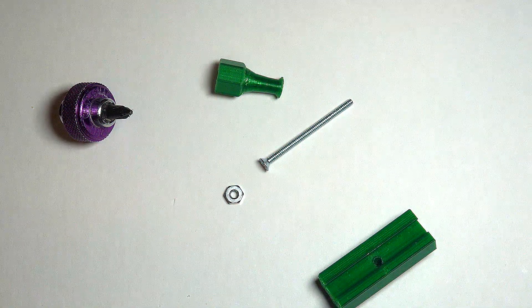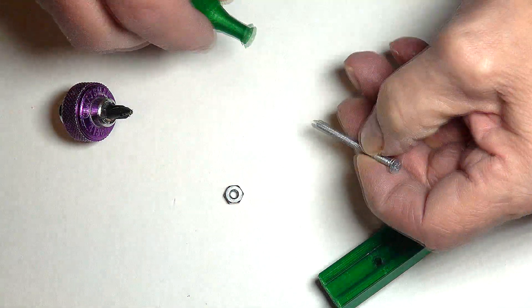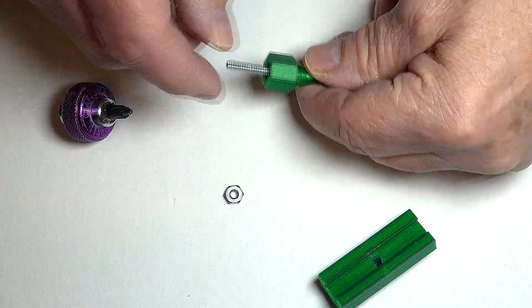To assemble the parts, start with the knob. Insert a 6-32 machine screw from the end with the small hole. The screw should slide through easily.